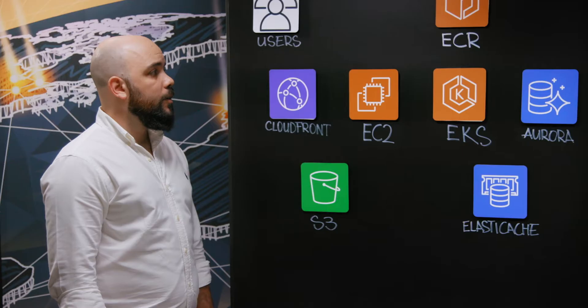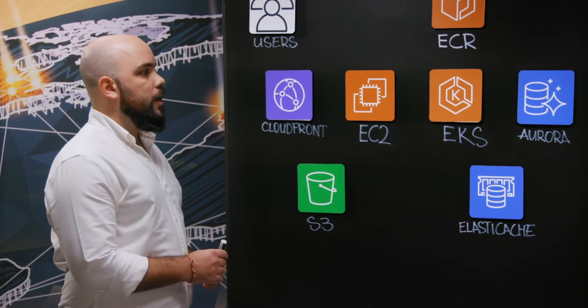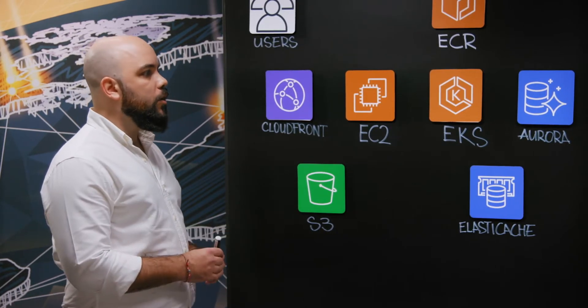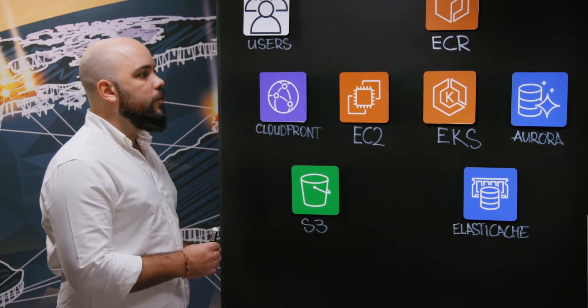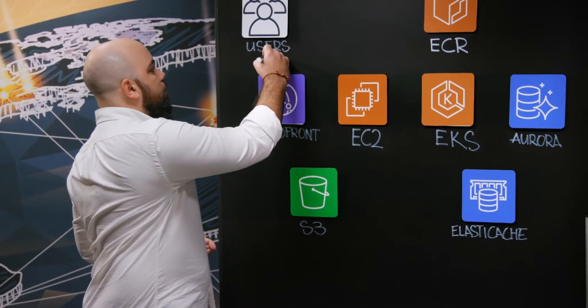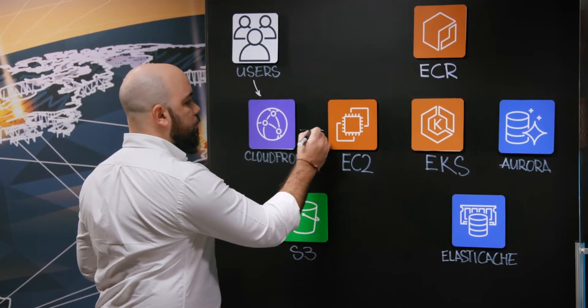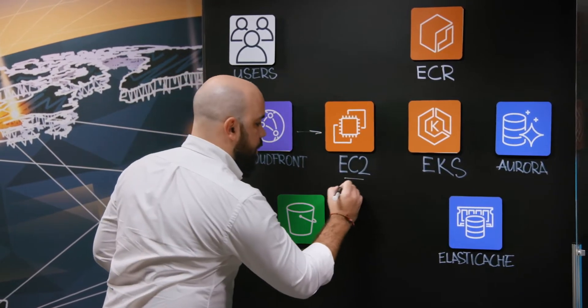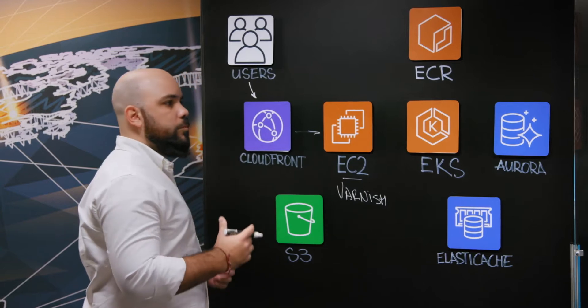On the board we have different components and services being presented. Could you walk us through the architecture diagram? Our e-commerce is powered by Magento. This architecture is adapted to make Magento work in the best way possible. All users go straight to CloudFront, and then we use Varnish on EC2 to cache as much content as possible from Magento.